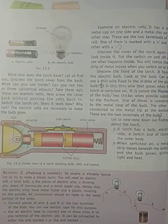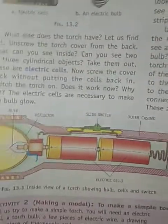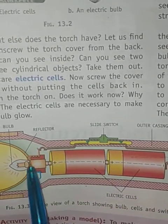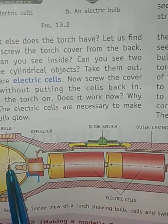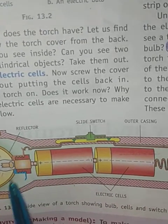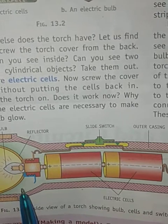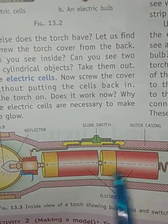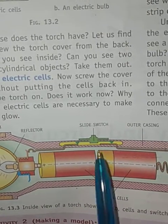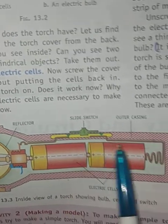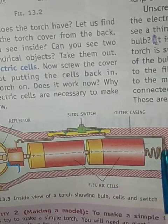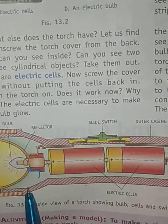If you look at the diagram of the torch, you can see the bulb of the torch and the reflector. The reflector is responsible for providing a greater lighting effect. These are the electric cells. This one is the slide switch, and this pink structure is the outer casing of the torch.